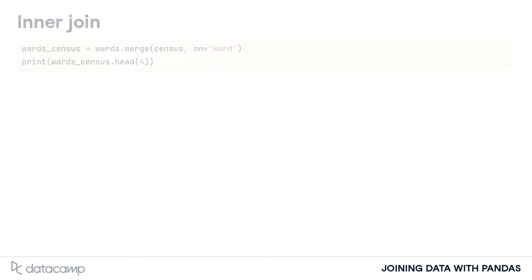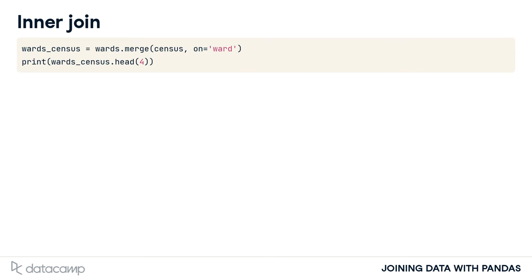The Pandas package has an excellent data frame method for performing this type of merge, called merge. The merge method takes the first data frame, ward, and merges it with the second data frame, census. We use the on argument to tell the method that we want to merge the two data frames on the ward column.